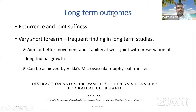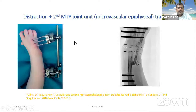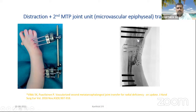Long-term outcomes include recurrence and wrist joint stiffness. The forearm remains very short compared to the opposite normal side. To address this, Vilkki's microvascular epiphyseal transfer can be used — a two-stage procedure where the foot's second metatarsophalangeal joint with its vascular pedicle is transferred and fixed to the ulna and second metacarpal with microvascular anastomosis to the hypoplastic radial artery and medial plantar artery. This provides longitudinal growth potential at the transferred epiphysis.